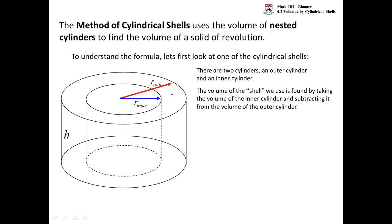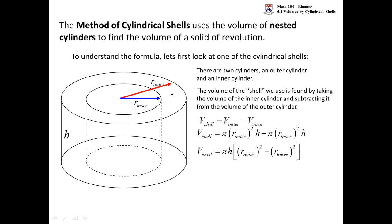The volume of the shell is found by taking π·r² for the outer minus π·r² for the inner — volume of the outer minus volume of the inner. We manipulate this formula: factor out the common π and h, leaving r_outer² minus r_inner². Then we apply the difference of squares: (r_outer + r_inner)(r_outer − r_inner).